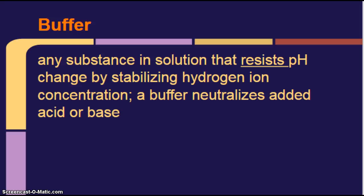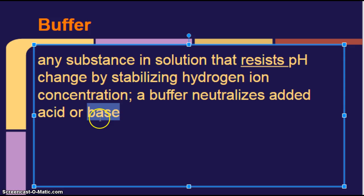So how your blood goes about keeping a constant pH is by using a buffer. So this is a vocab word you want to write down. Buffer. Any substance in solution that resists pH change by stabilizing hydrogen ion concentration. A buffer neutralizes added acid or base. So if you put in more of a base, the buffer neutralizes it. If you put in more of an acid, the buffer neutralizes it.